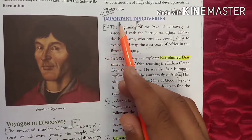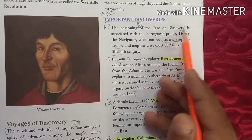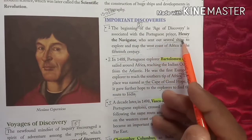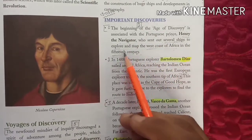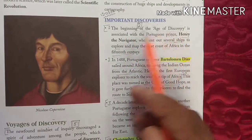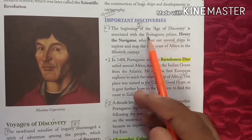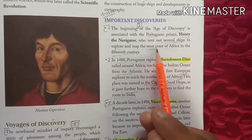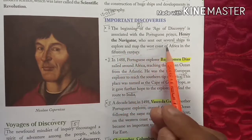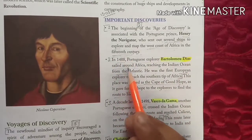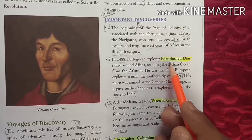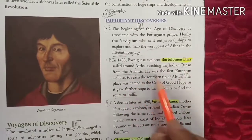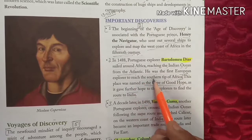The beginning of the age of discovery is associated with the Portuguese prince Henry the Navigator, who sent out several ships to explore and map the west coast of Africa in the 15th century. In 1488, Portuguese explorer Bartolomeo Dias sailed around Africa, reaching the Indian Ocean from the Atlantic. He was the first European explorer to reach the southern tip of Africa.